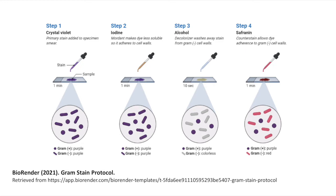A critical point to remember when performing Gram stains is that the decolorisation step is essentially a form of differentiation, and like many other types of differentiation steps performed in histochemistry, it is possible to either over-differentiate or under-differentiate. So on that basis, you can end up with negative organisms showing as positive, and positive organisms that may be over-differentiated and be misinterpreted as negative. Hence the reason for control sections is absolutely essential when performing Gram stains.